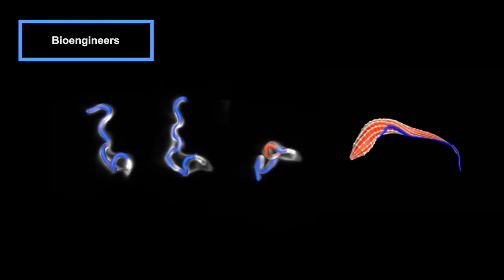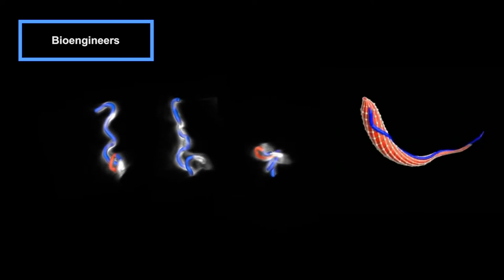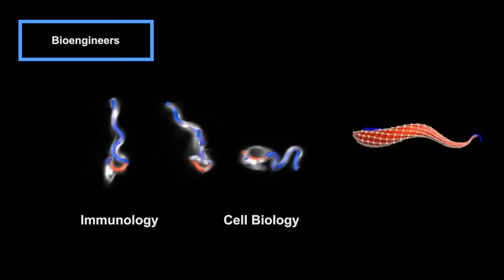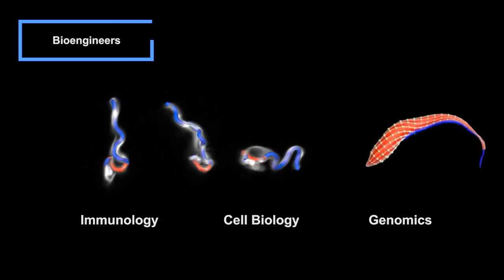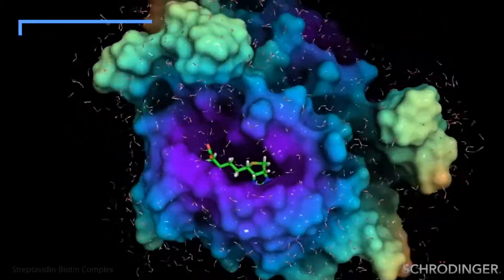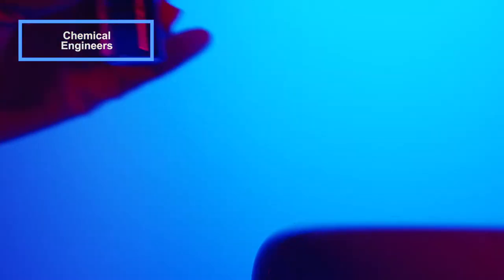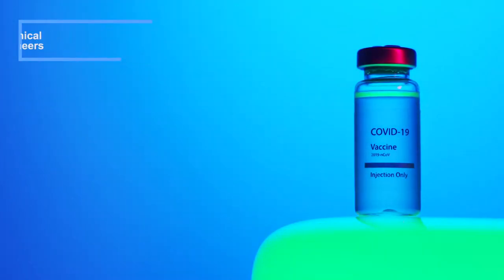Bioengineers use systems biology to understand immunology, cell biology, and genomics. Chemical engineers use computational chemistry to develop new drugs.